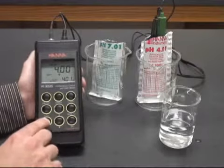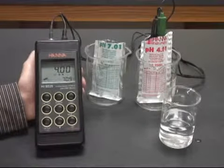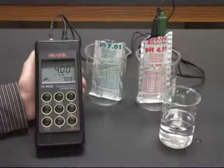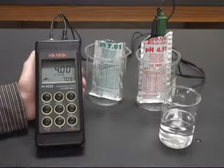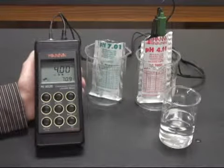You hit confirm again. You'll see your meter move into measurement mode, displaying the temperature, and you're good to go. You are now ready to measure pH. Thank you.